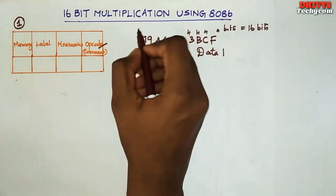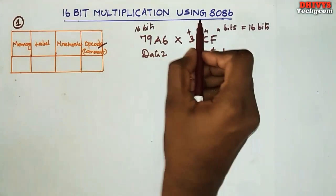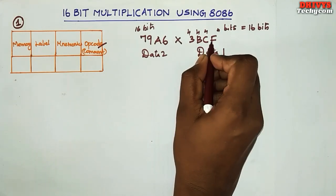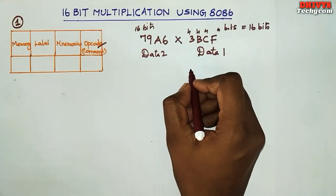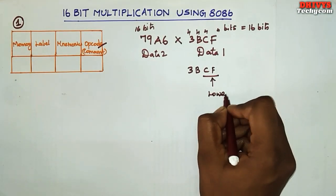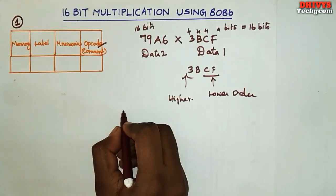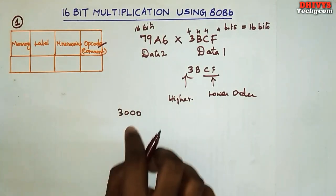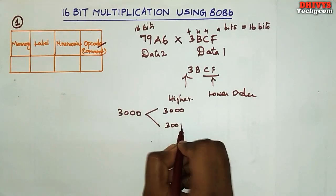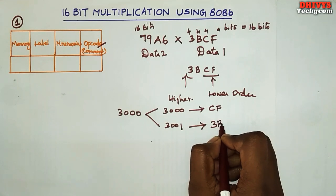Now we can store the second data in the same 16-bit format. So 16 bits into 16 bits. Now the data is stored at location 3000. We can store the 3000 data — it is stored at 3000, and this is 3001. So 3000 is stored as CF, and the higher order value 3B is stored at 3001.